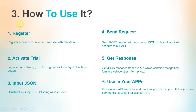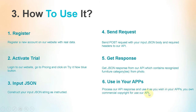How to use it? Register a new account on our website with real data. Log in to our website, go to pricing and click on the try it now blue button. Construct your input JSON string as instructed. Send a POST request with your input JSON body and required headers to our API. Get a JSON response from our API which contains the recognized furniture category from the photo. Process our API response and use it as you wish in your apps. You own commercial copyright to use our API.